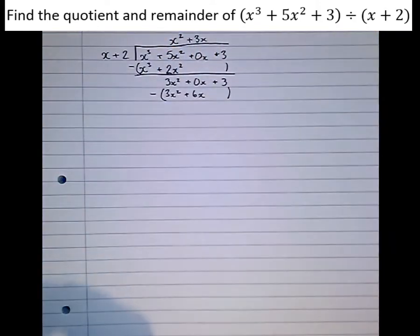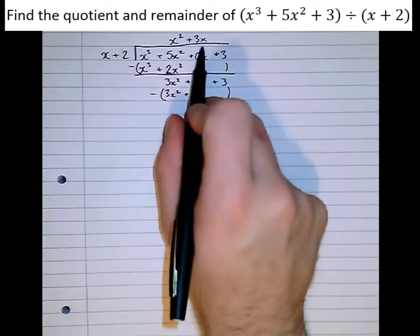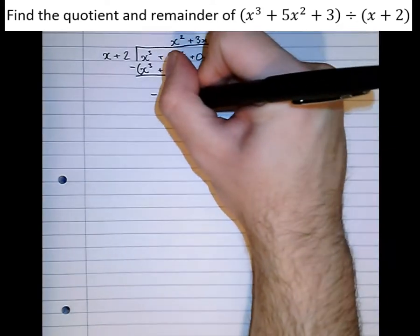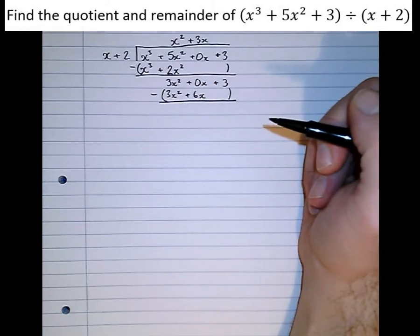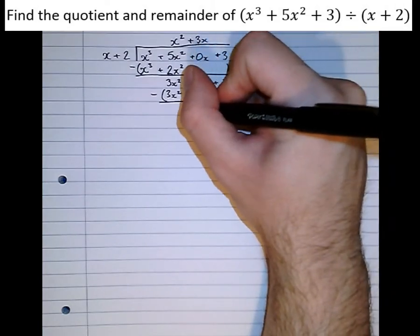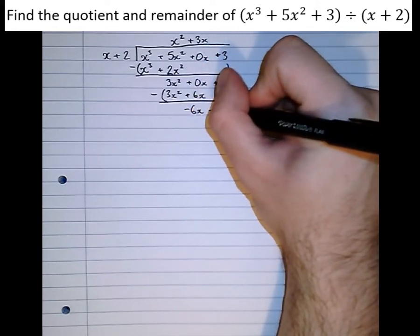And subtract. Now that's why it was important to give the x's a space. Had we not have given the x's a column here, we would have had no way to write that 6x. Subtract it to get 3x squared minus 3x squared, which is 0. 0 minus positive 6x is minus 6x. And 3 minus 0 is 3.